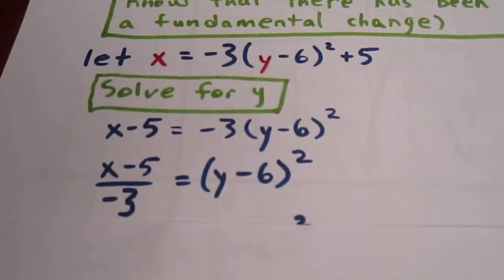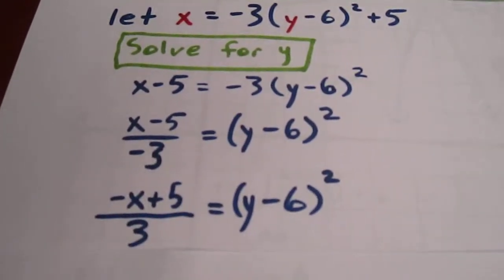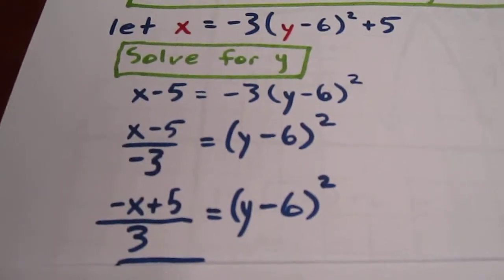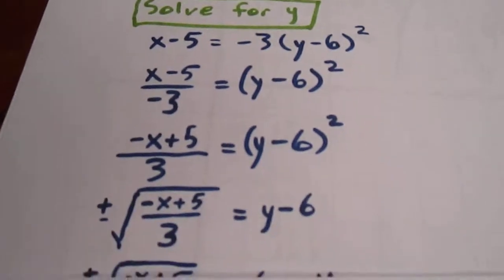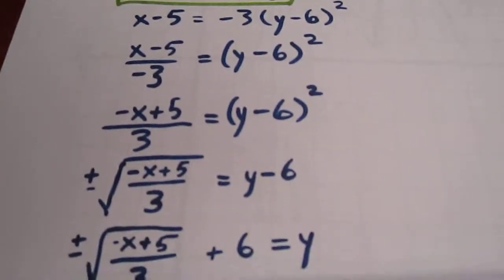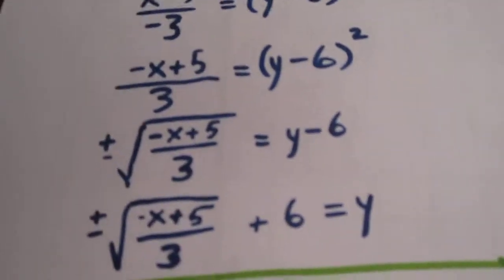We don't typically have negative denominators, so we multiply numerator and denominator by negative 1 to get negative x plus 5 over 3 on the left-hand side. We can then take the positive or negative square root on both sides, and we end up, after adding 6 with this statement.